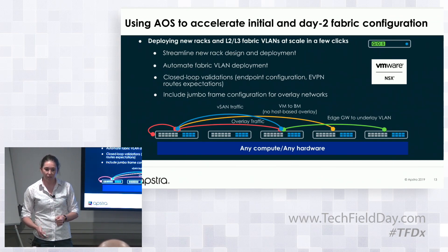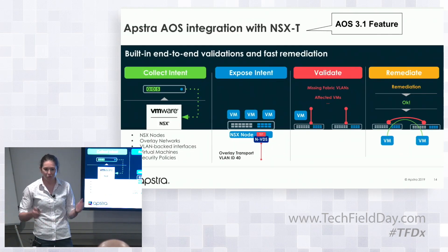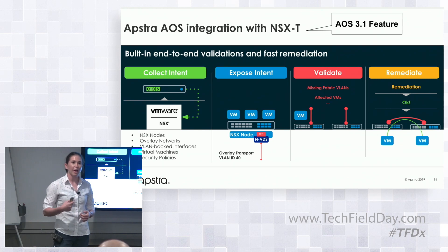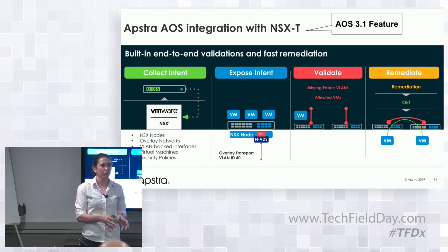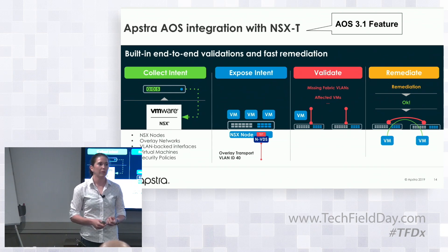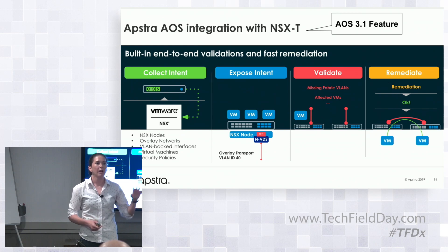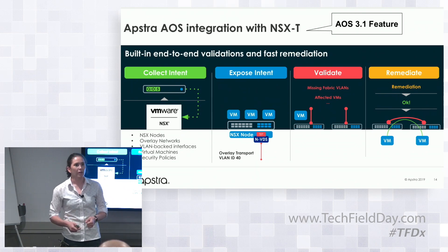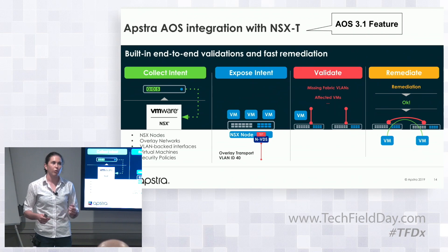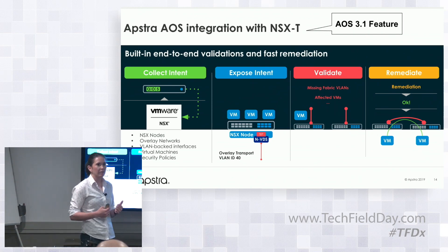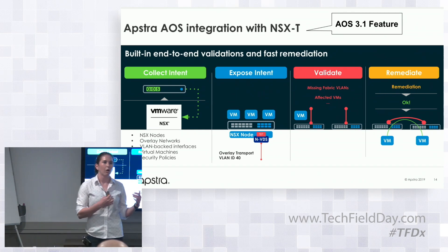What is new in this release is that we actually go and talk to NSX-T to collect information about what is configured on the NSX-T node uplinks. Why? Because if I want to validate that my LAG, my VLANs, and my MTU are properly configured end-to-end, I need to collect information from NSX-T. This gives AOS intent-based analytics the ability to validate configuration not only on the fabric, but now also on the NSX-T side.